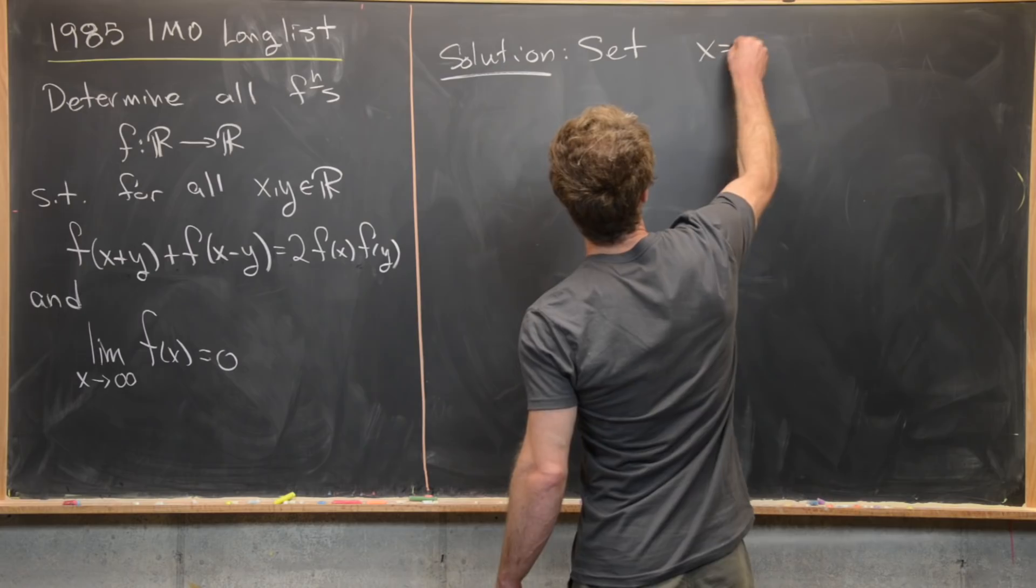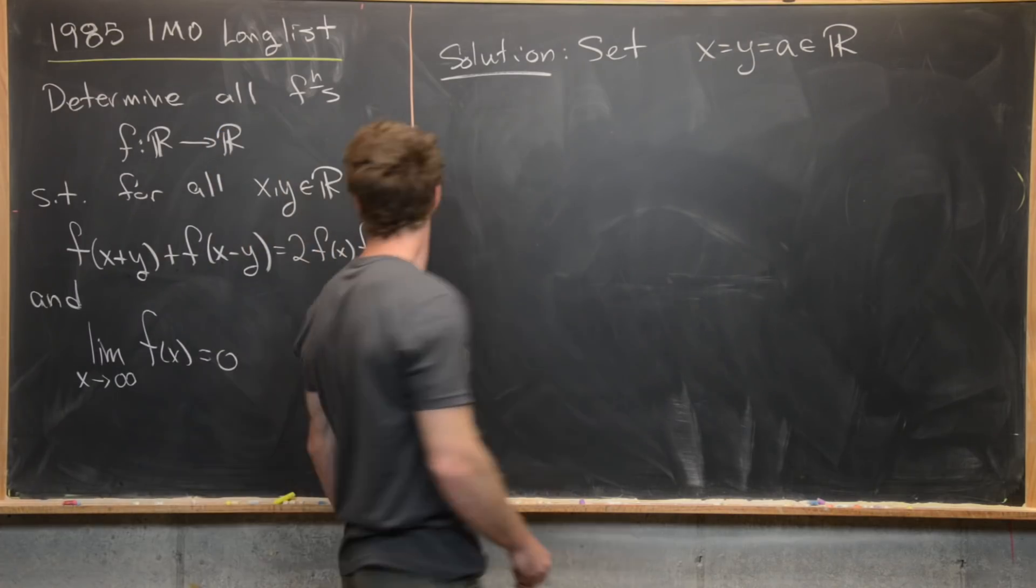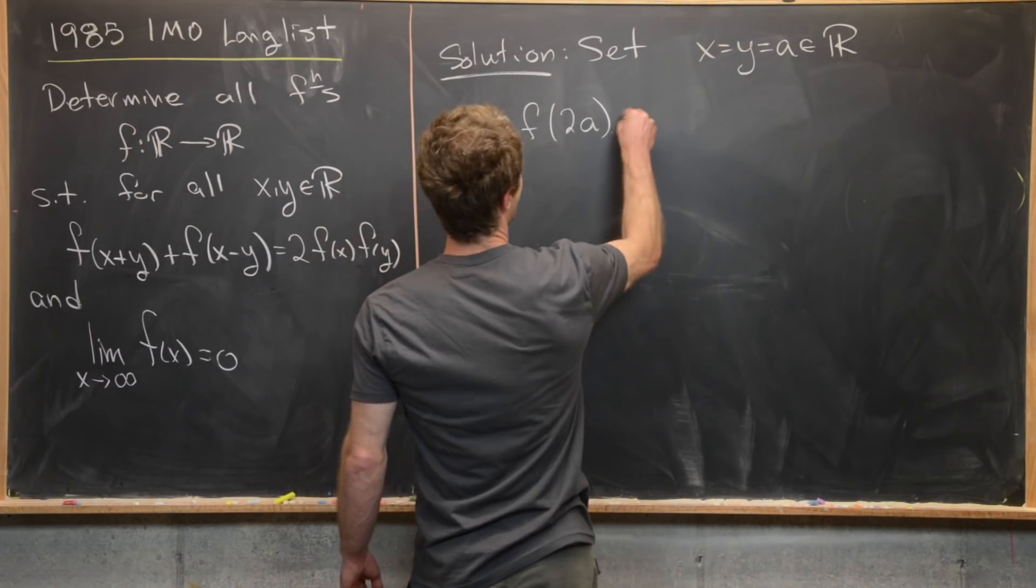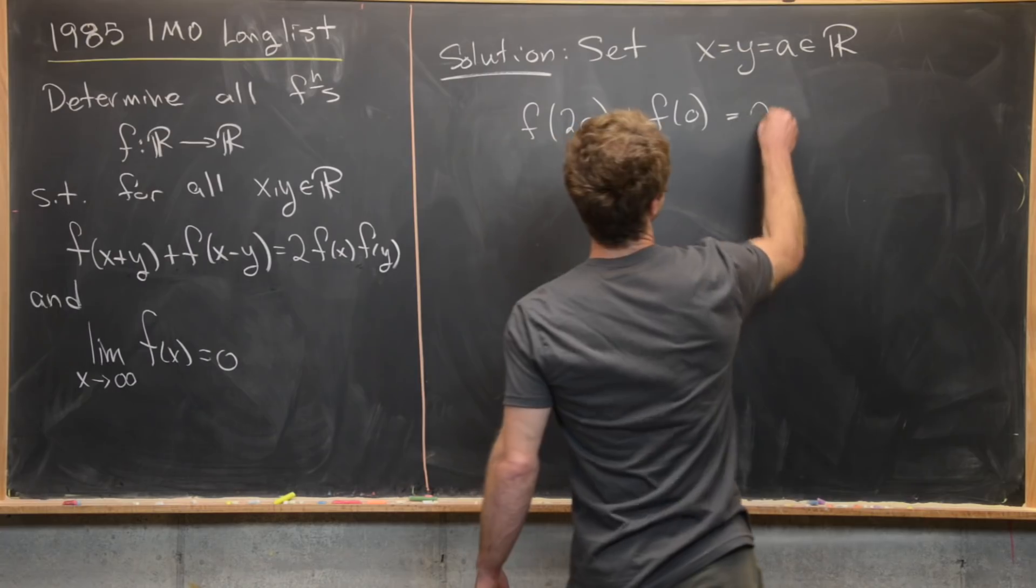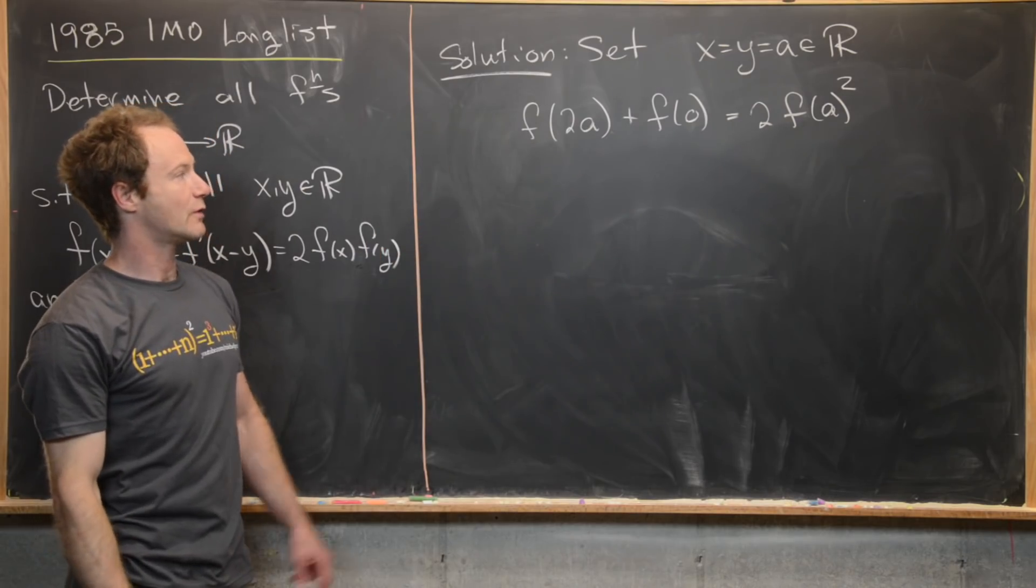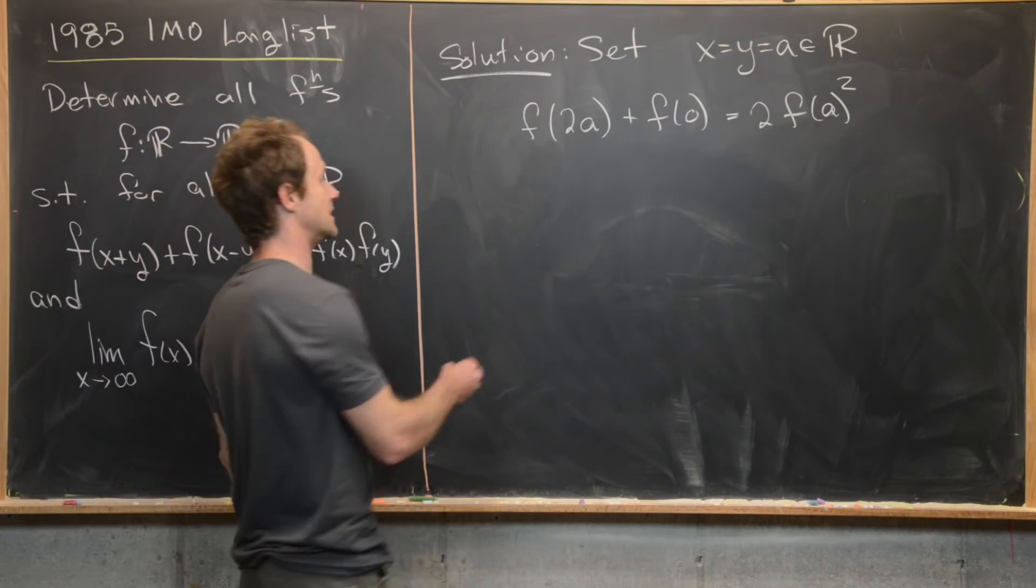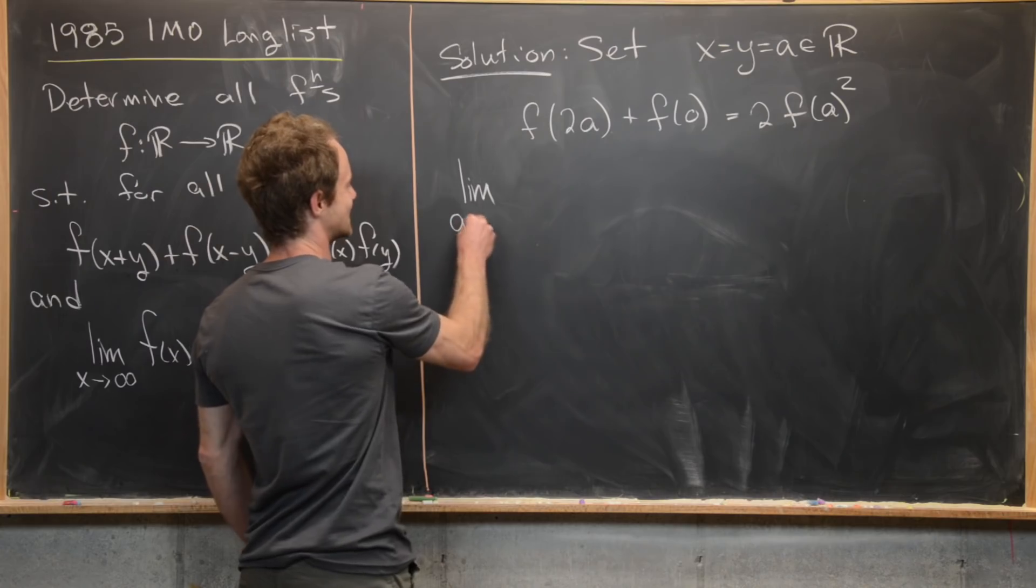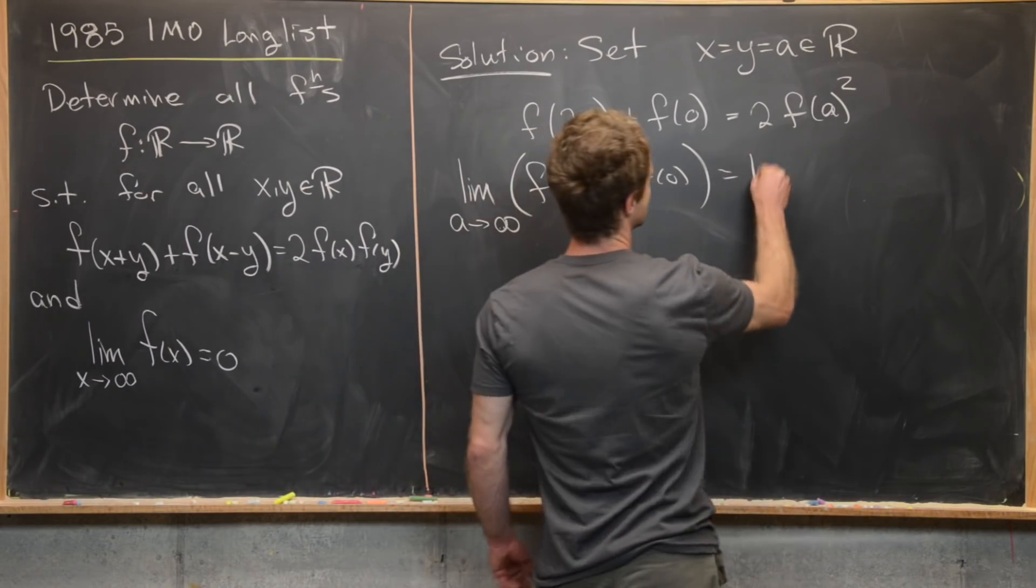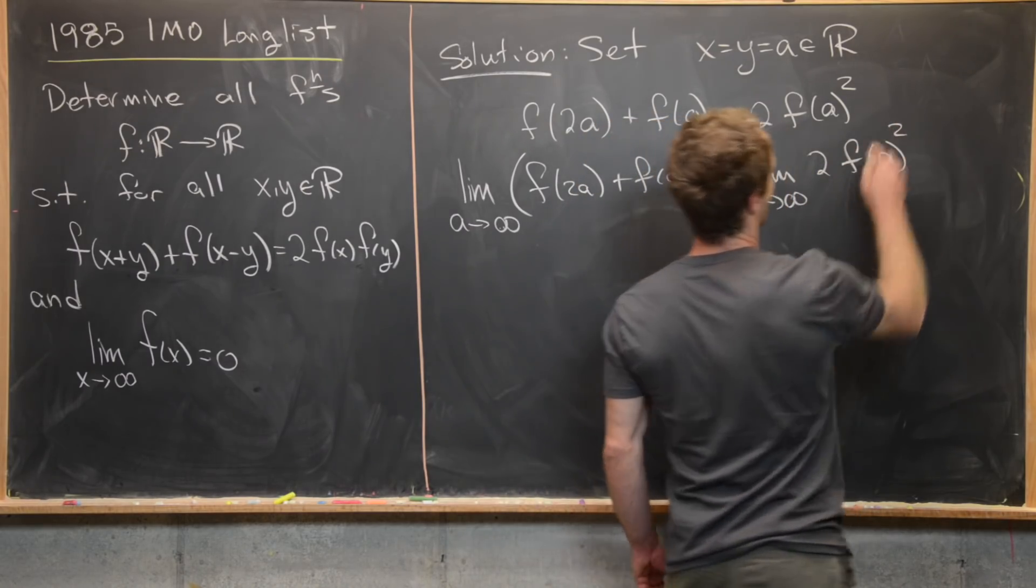Let's start by setting x equal to y equal to a, an arbitrary real number, and see what we get out of that. So notice the left hand side of this equation will be f(2a) + f(0) = 2f(a)². Now what we want to do is take the limit of both sides of this equation as a approaches infinity. So we have lim as a→∞ of f(2a) + f(0) = lim as a→∞ of 2f(a)².